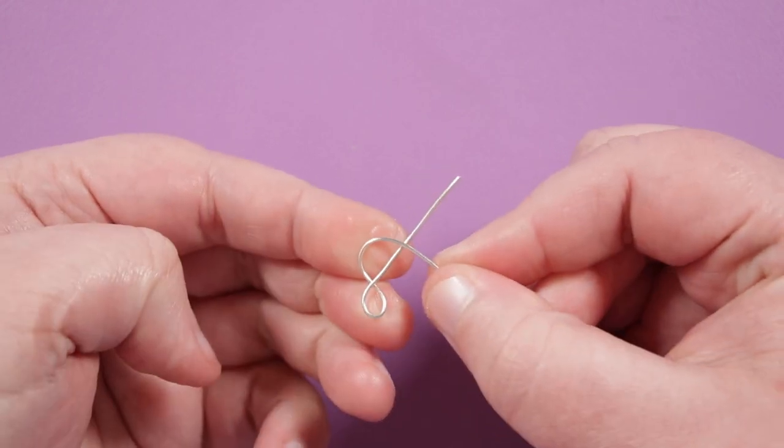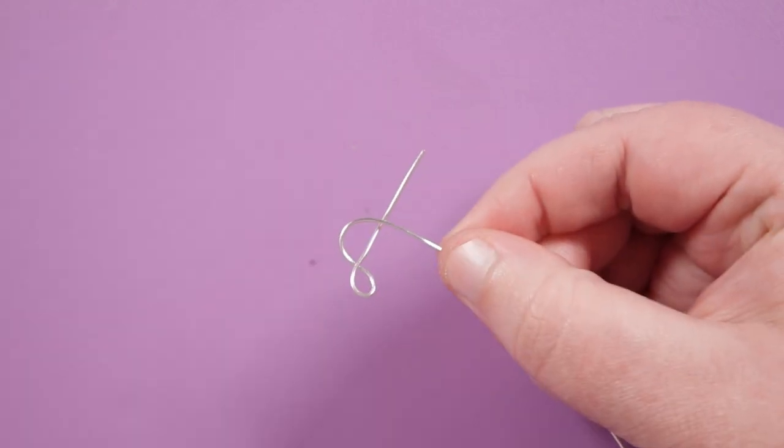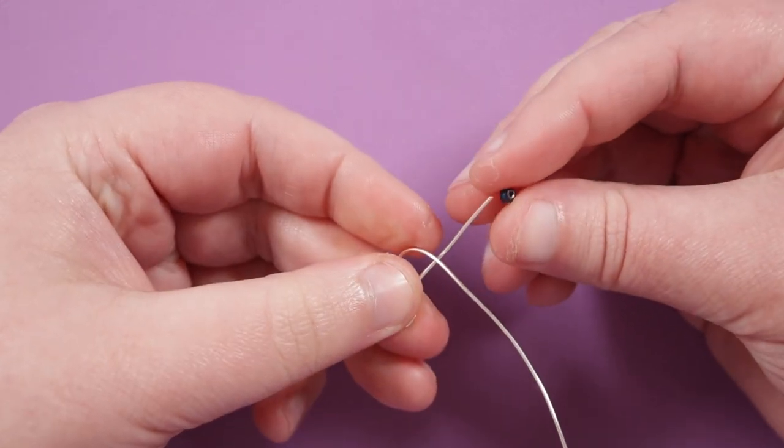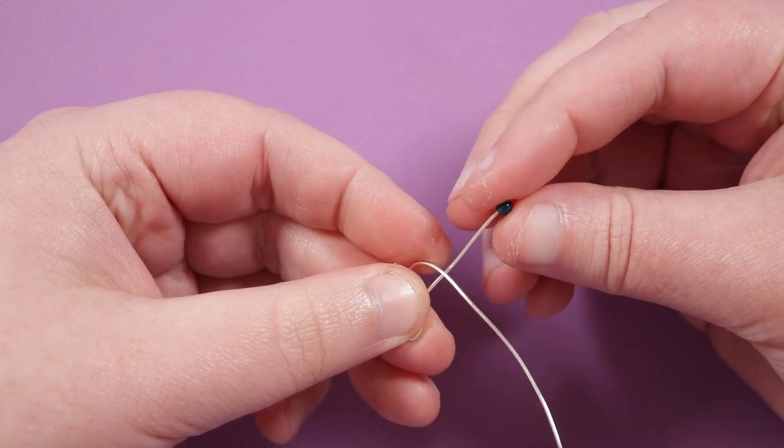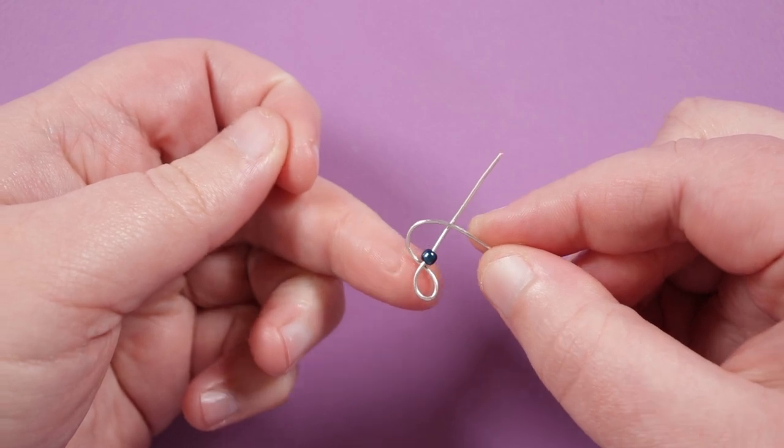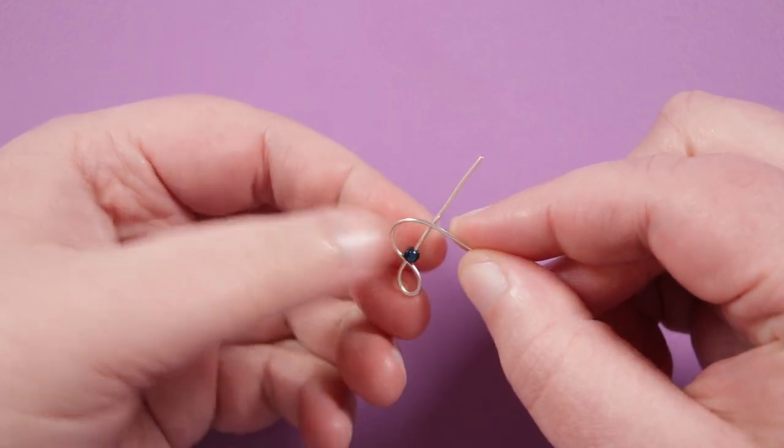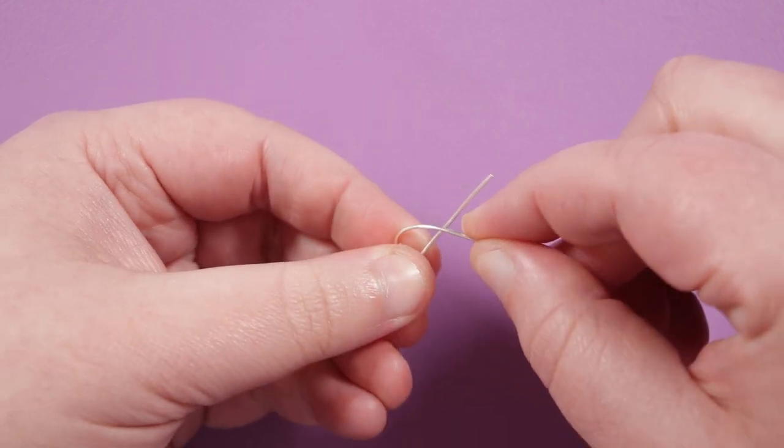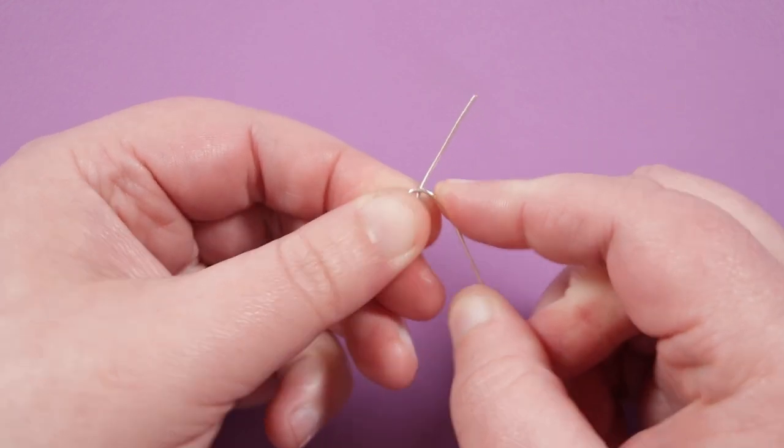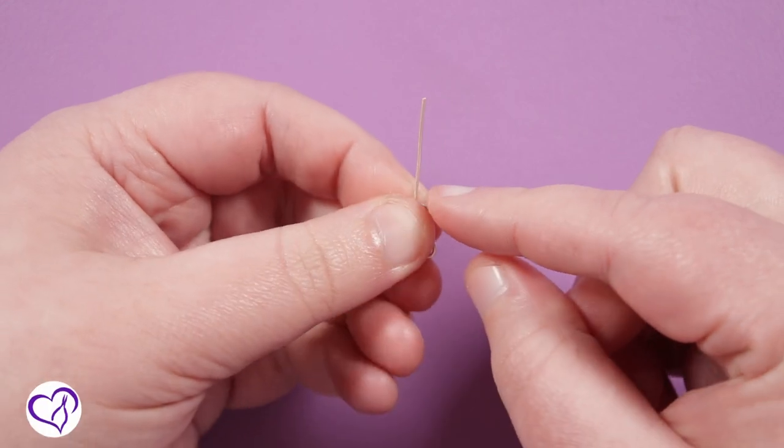And then before I take it any further than this what I'm gonna do is actually add my first bead so grab that and put this one on to the short end of the wire here and just let it slide down to where that wire is crossing underneath and then use that bead make sure it's pushed all the way down to help shape this length of wire because we want it tight around that bead.